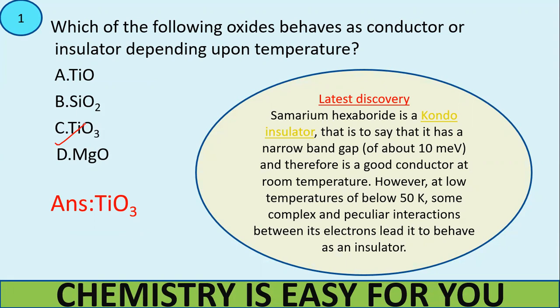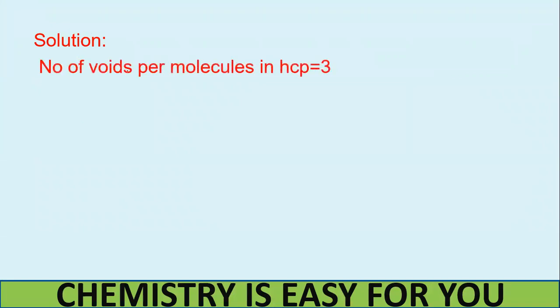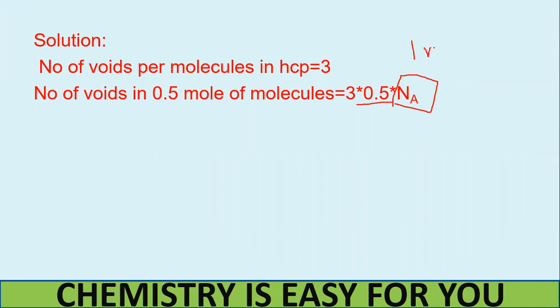That's why it's known as a Kondo insulator. Please keep this example in mind, samarium hexaborate. Now the second question, total number of voids in 0.5 mole of a compound forming hexagonal closed pack or HCP structure is? Let's directly go to the solution. We know the number of voids per molecule, that is in one molecule of hexagonal closed pack structure, there are three voids. And the number of voids in 0.5 mole would be 3 into 0.5 into the total number of molecules. We know that one mole is equal to NA number of molecules, which is the Avogadro principle.